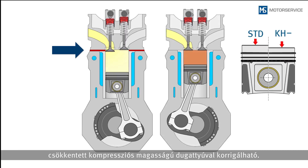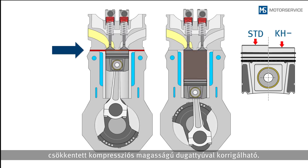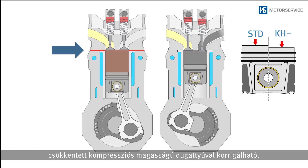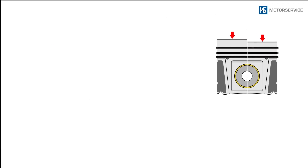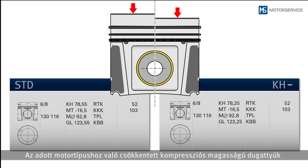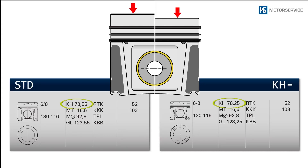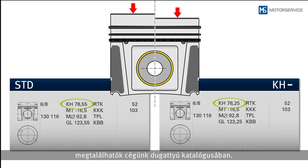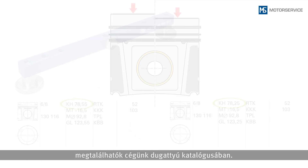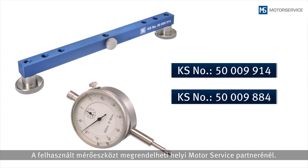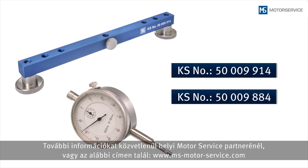Excessive piston protrusions can be corrected by means of cylinder head gaskets of appropriate thickness, or by using pistons with reduced compression height. Pistons with reduced compression height can be found in the piston catalogue under the respective engine types.